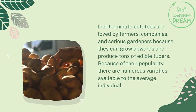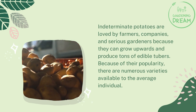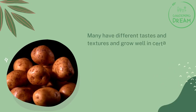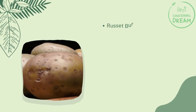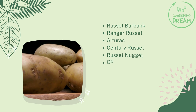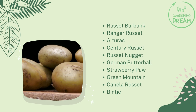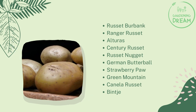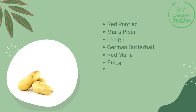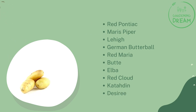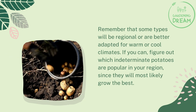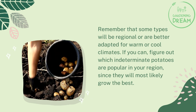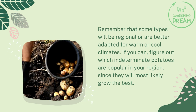Indeterminate potatoes are loved by farmers, companies, and serious gardeners because they can grow upwards and produce tons of edible tubers. Because of their popularity, there are numerous varieties available. Many have different tastes and textures and grow well in certain climates, so it's important to research a variety before settling on it. Some of the most common and delicious include: Russet Burbank, Ranger Russet, Alturas, Century Russet, Russet Nugget, German Butterball, Strawberry Paw, Green Mountain, Canela Russet, Bench Red, Pontiac, Maris Piper, Lehi, German Butterball, Red Maria, Butte, Elba, Red Cloud, Katahdin, and Desiree. Remember that some types will be regional or better adapted for warm or cool climates.